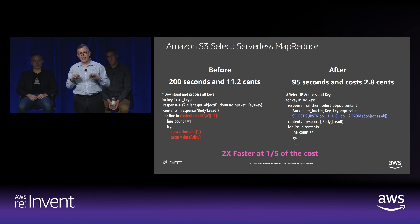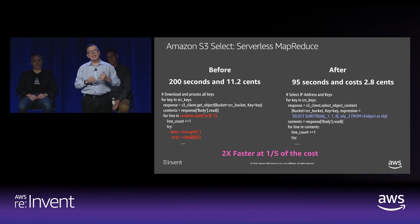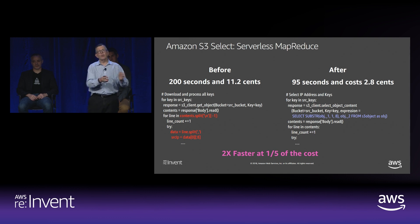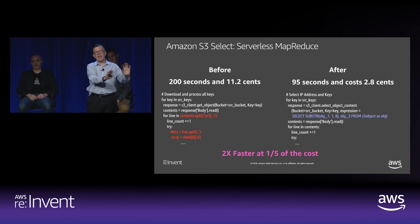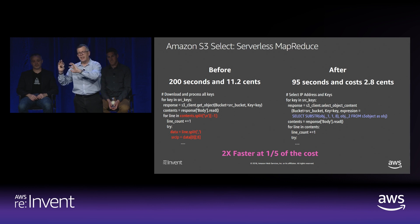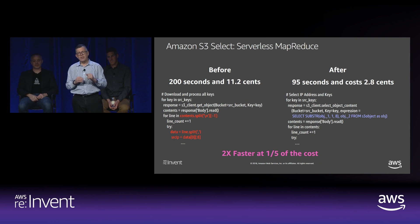A couple of examples: we had an SA that went in and, for fun using Lambda, wrote a serverless map-reduce function using S3 Select and compared that to what they would do without Select. For a given function, they were able to do it 2x faster at a fifth of the cost.